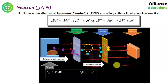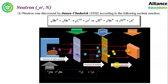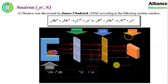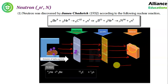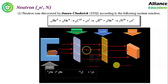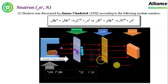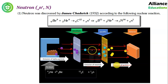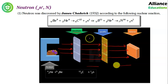Initially, when paraffin wax was not placed in front, the detector showed no reading. But when paraffin was placed in between, the detector started showing readings. This is because neutrons are slightly heavier than protons, and that is why they can displace protons from the paraffin sheet.